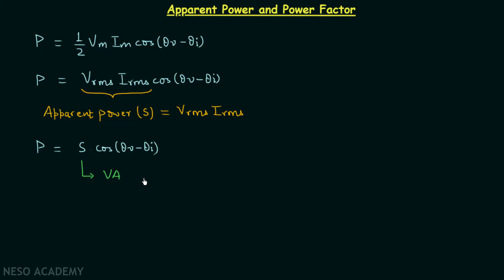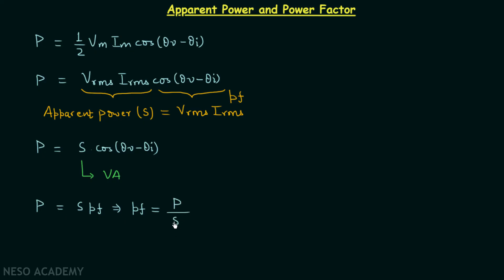Now we will shift our focus to the second term in this formula. The second term is a factor, and this factor cos(θv − θi) we know as power factor. So the average power is equal to the apparent power multiplied by the power factor. From here we can say that the power factor is equal to the ratio of average power to apparent power, and it is equal to cos(θv − θi).